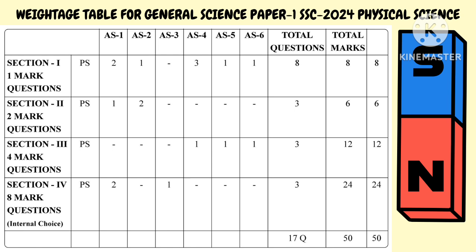Section 3 has three questions. Especially this year there is a facility of internal choice in diagrams. One question is from AS4 (information skills), one from AS5 (diagram), and one from AS6 (biodiversity and application to daily life) — together three questions, total marks for Section 3.